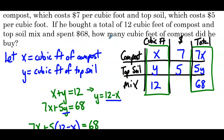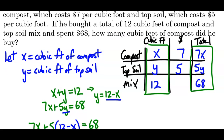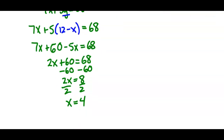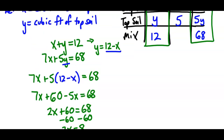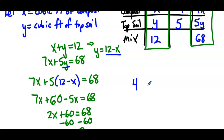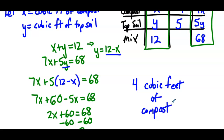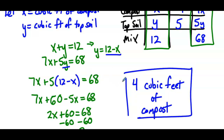Going back to the question — they only wanted us to determine how many cubic feet of compost he bought. x is the cubic feet of compost, and we solved for x, so we're done. He bought 4 cubic feet of compost. If we had to figure out the topsoil, we would just plug the value 4 in for x into one of our two equations and solve.